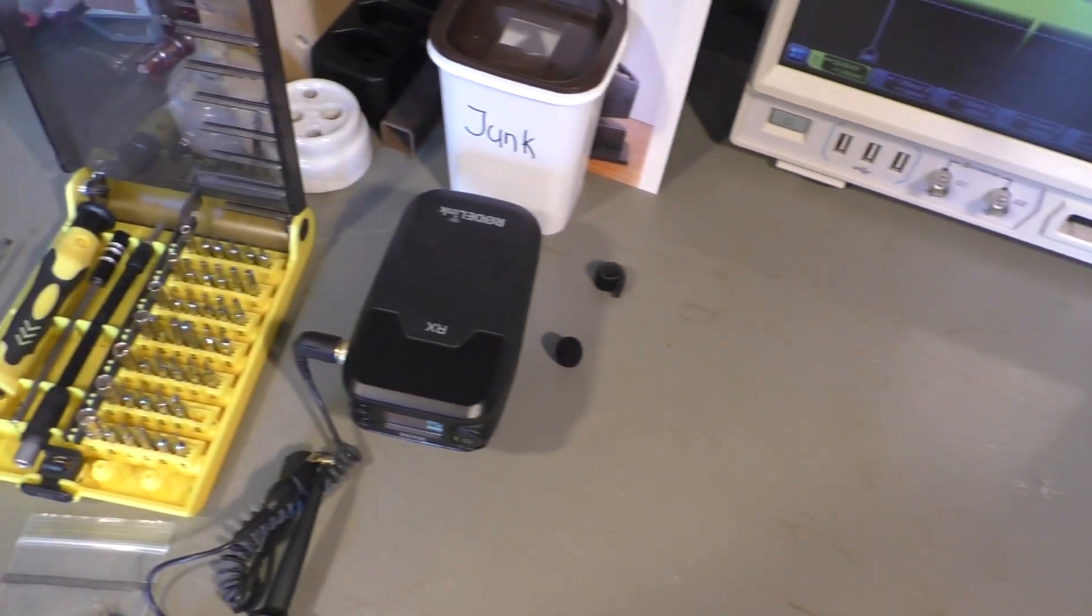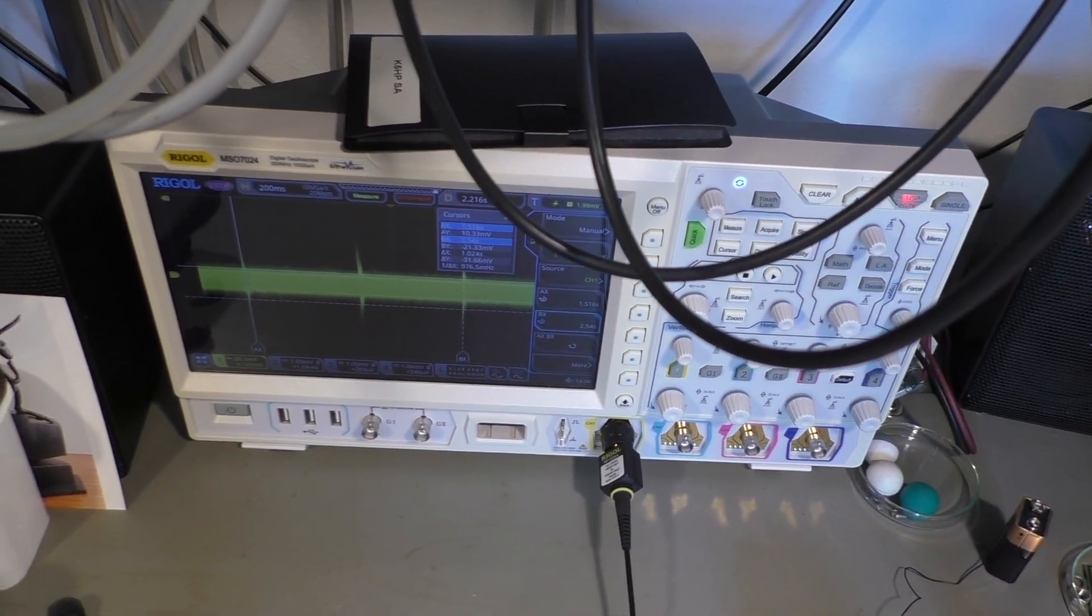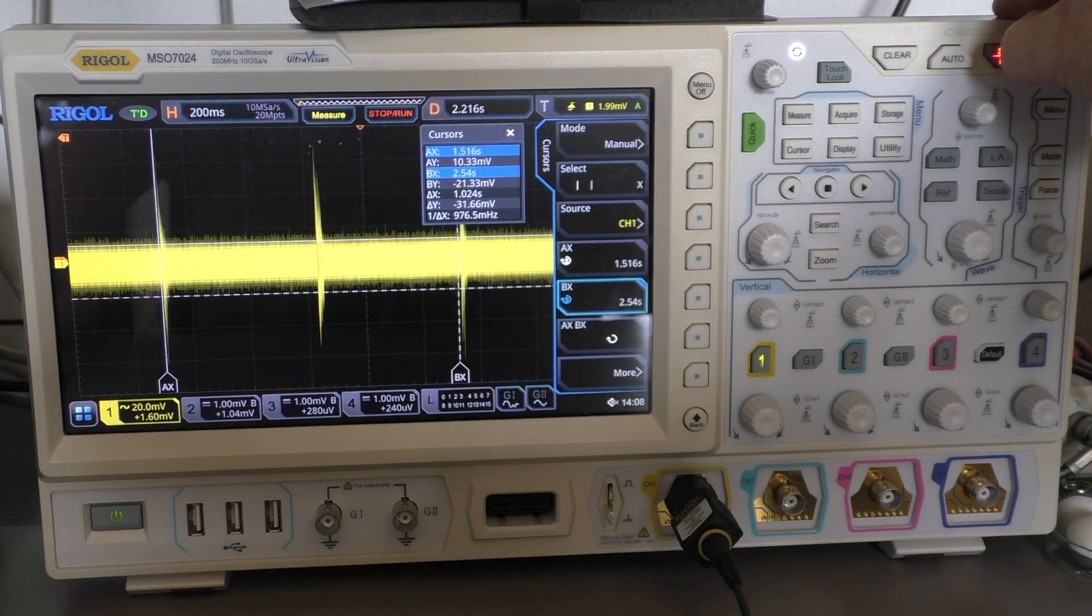The microphone is connected to my wireless transmitter here that acts as an amplifier. Then we go to the oscilloscope and we can see the ticks here pretty clearly.